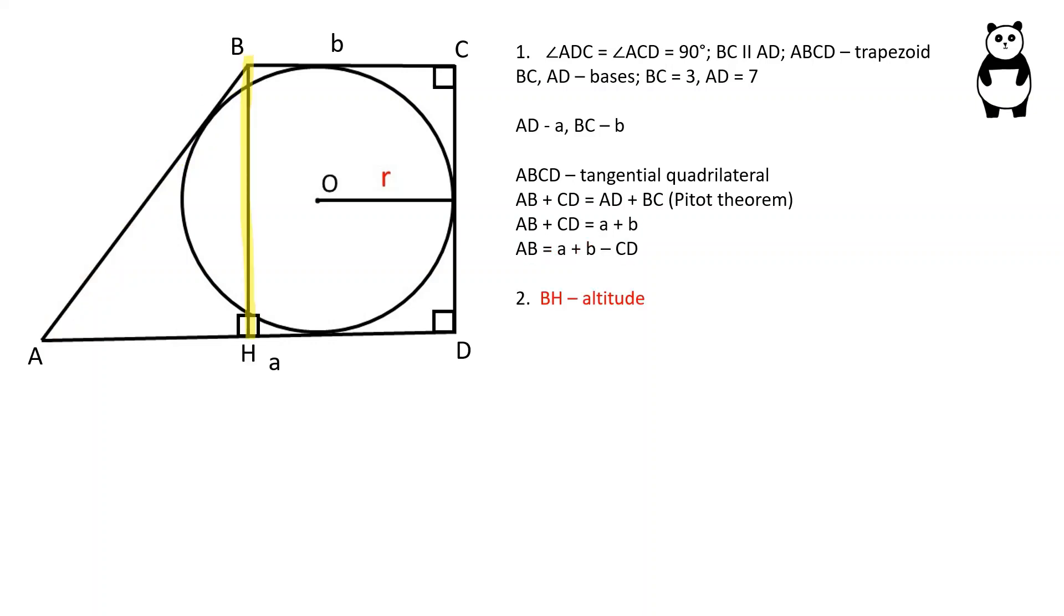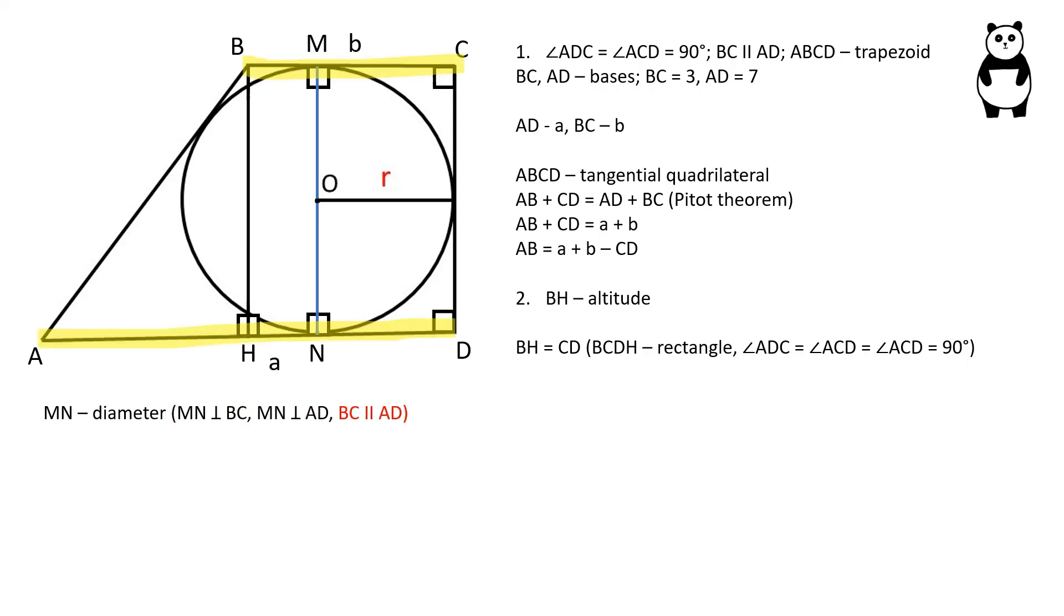Let's draw the altitude from angle B to the side AD. BH is equal to CD because BCDH is a rectangle. All of its angles are 90 degrees. Let's draw the diameter MN. Since the radius of a circle is perpendicular to the tangent line through its endpoint of the circle's circumference, and BC and AD are parallel to each other, the diameter will be equal to BH and CD.